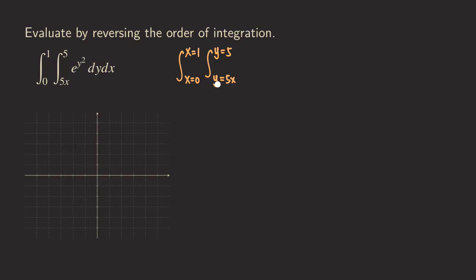So right now we're going to get y equals five x. We can draw this line — it has slope five and goes through the origin, so we start from the origin and go up to five. Then y equals five is the horizontal line, so we get this horizontal line. And then x goes from zero to one — this point has an x value of one. So we get this triangular region here, which is the region of integration for this problem.